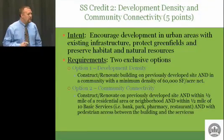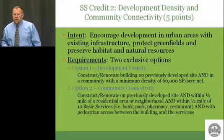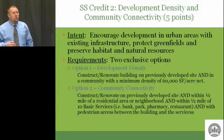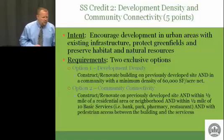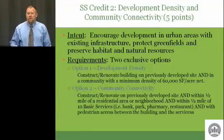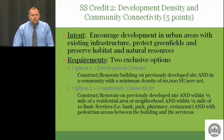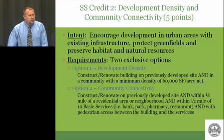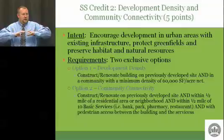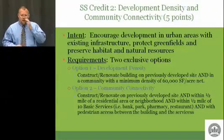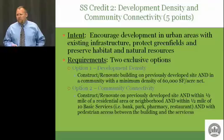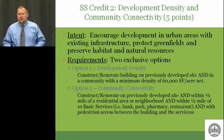We're building on a previously developed site, so we're not plowing up a greenfield. But also we're encouraging people to walk or bike — leave that car at home. That's the whole purpose of this particular credit. How do we prove option two? Google Earth — you get a half-mile radius, draw a circle, here's our site. Then you label: here's New Way Dry Cleaners, here's Koala Care Child Care Center. You just label those. It's pretty easy to prove.